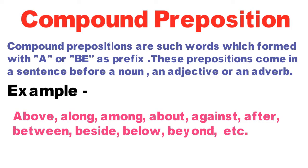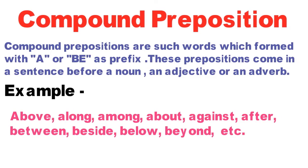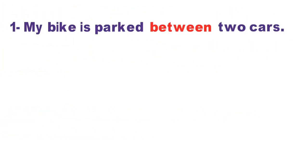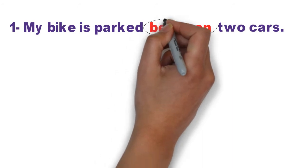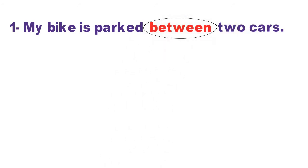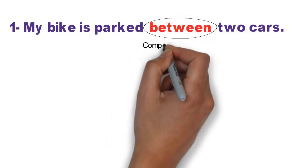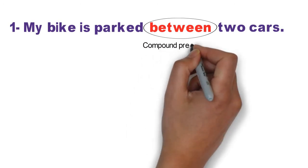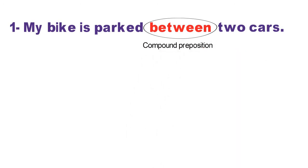Toh chaliye students, compound prepositions ko kuch sentences mein use karke dekhte hain. Sabse pehla sentence: My bike is parked between two cars. Meri bike do caaron ke beech mein khadi hai. Is sentence mein humne red color word 'between' ka use kiya hai, jismein prefix ki tarah 'be' ka use hua hai, aur yah word ek noun ke pehle likha gaya hai, isliye yeh compound preposition kehlayega.